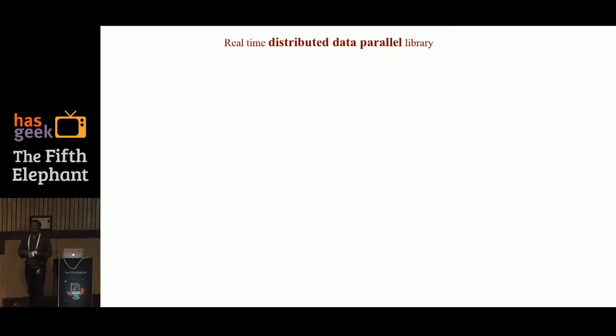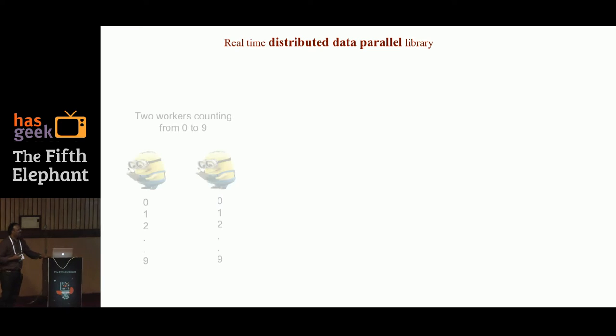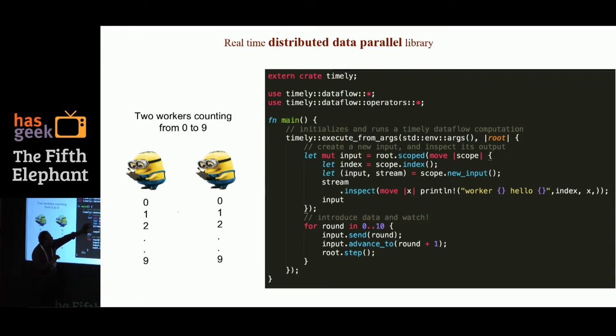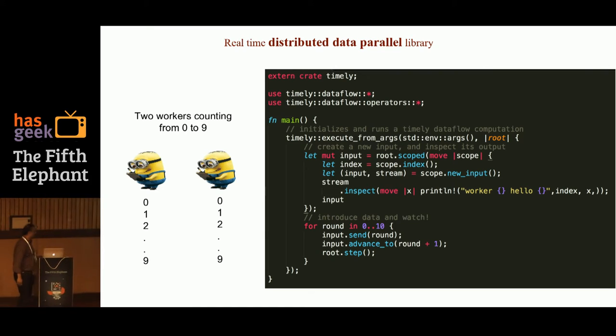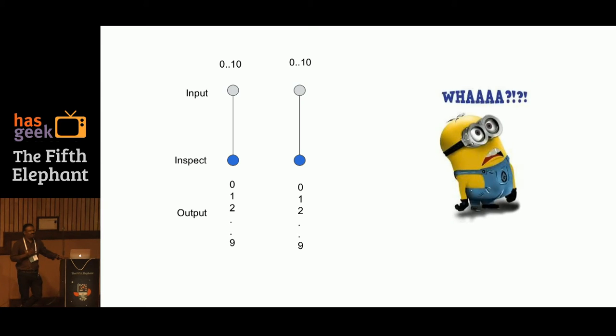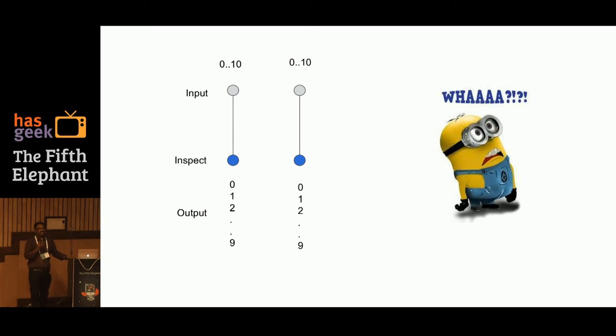Let me try to justify the distributed data parallel nature. And I'm going to do that with a hello world. So let's say that you have two workers. And these two workers are going to print from 0 to 10. That's what they're going to do. That would be your code. So it's in Rust. If you're new to the language, it's quite hard to digest. Basically, this is the part that you need to be worried about. You have a scope and you're creating a stream where all you're doing is inspecting what's coming in the stream. And there is an input for which you can send the numbers.